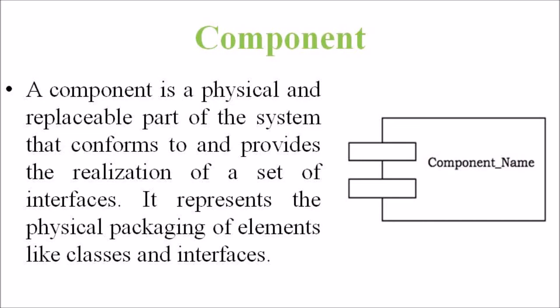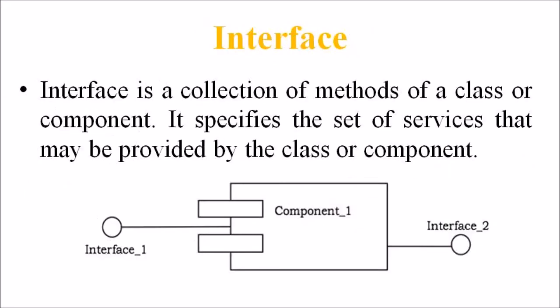Next, we are discussing interface. An interface is a collection of methods of a class or component; it specifies a set of services that may be provided by the class or a component. Generally, an interface is drawn as a circle together with its name. An interface is almost always attached to the class or component that realizes it. This figure shows the notation of an interface.